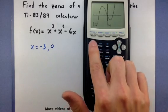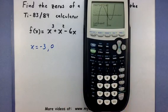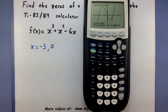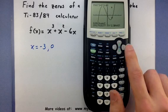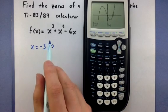One more time. So second, calc, zero, enter. Now I'm going to move it to the left side of this zero, enter. Then to the right side of that zero, enter. And finally put my cursor right where I think that zero is, press enter one last time, and it displays where it is. So it says x equals two.